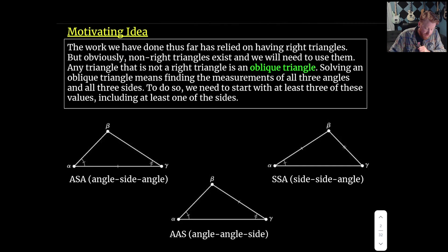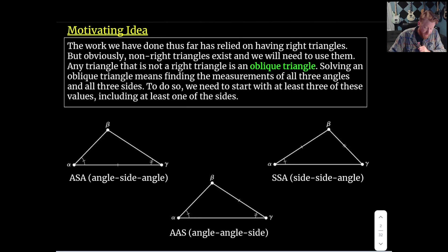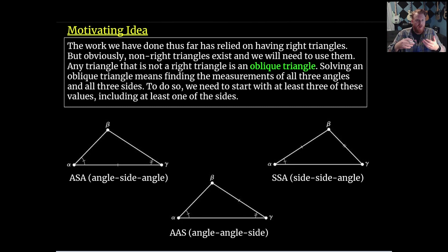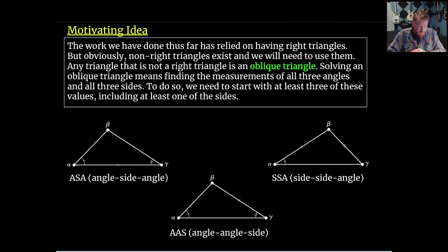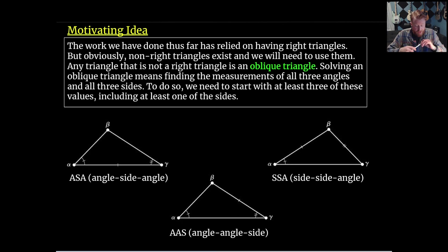The work we've done so far has relied on having right triangles. Obviously there are triangles we're going to need to use that aren't right triangles out in the world. Any triangle that is not a right triangle we call an oblique triangle. Solving an oblique triangle means finding all the measurements — all three angles and all three sides. To do so, we need to start with at least three of the values, including at least one of the sides.